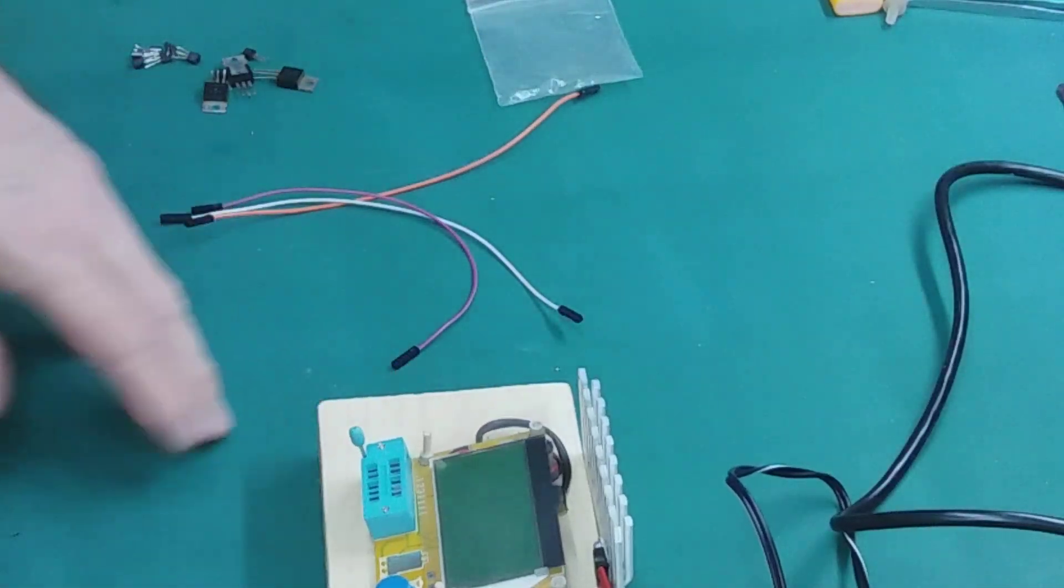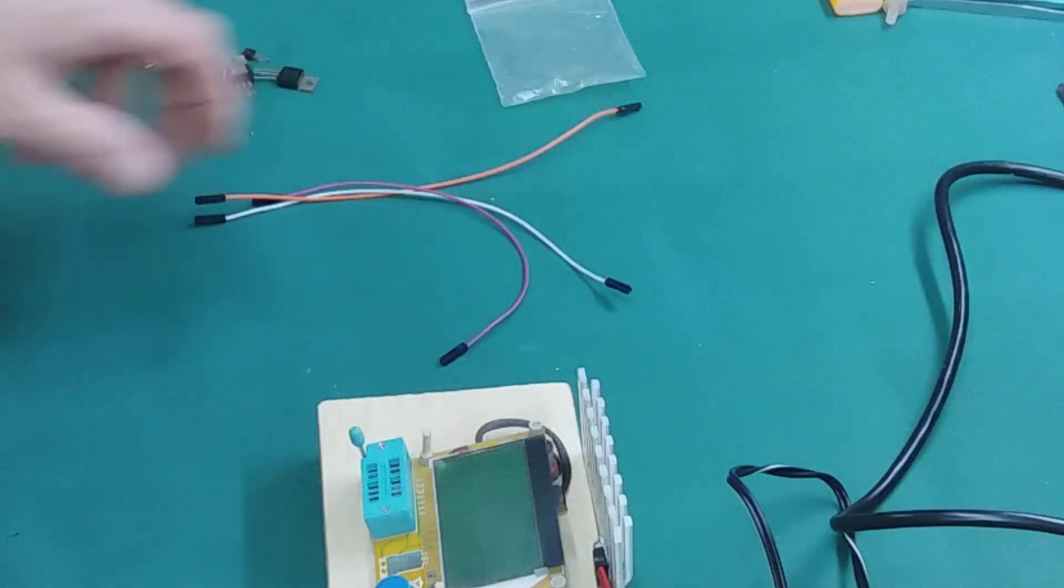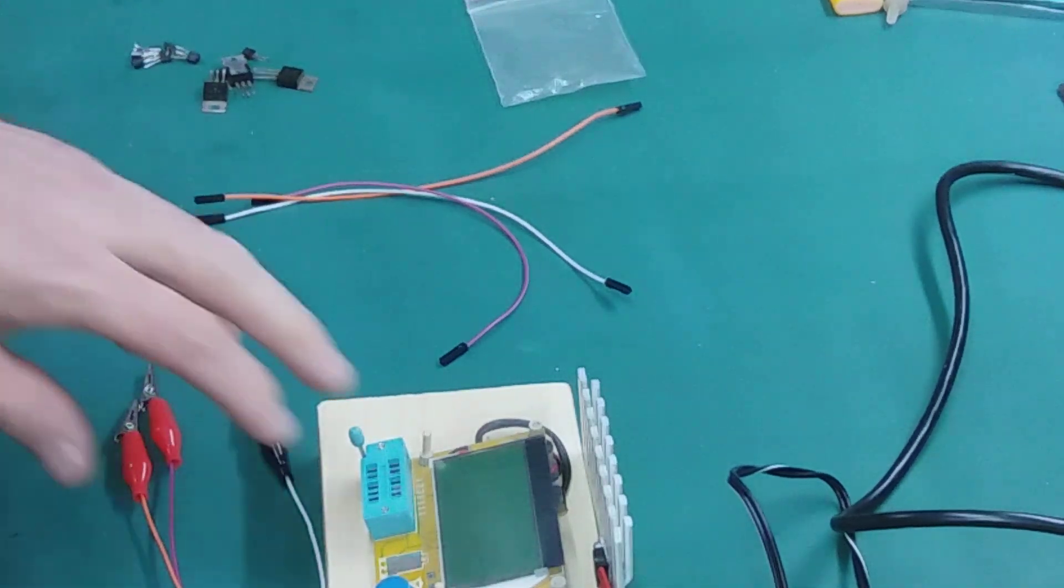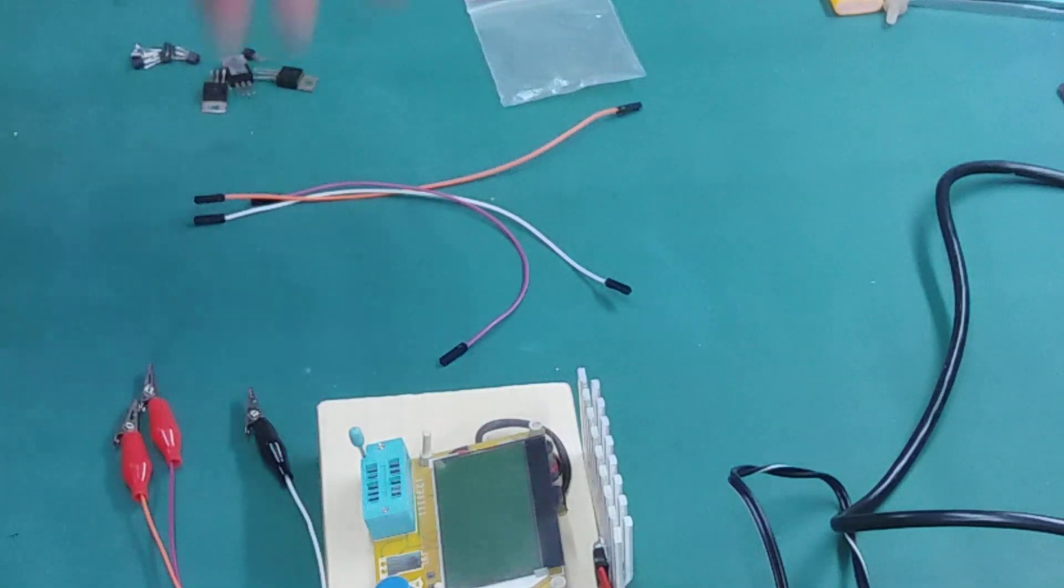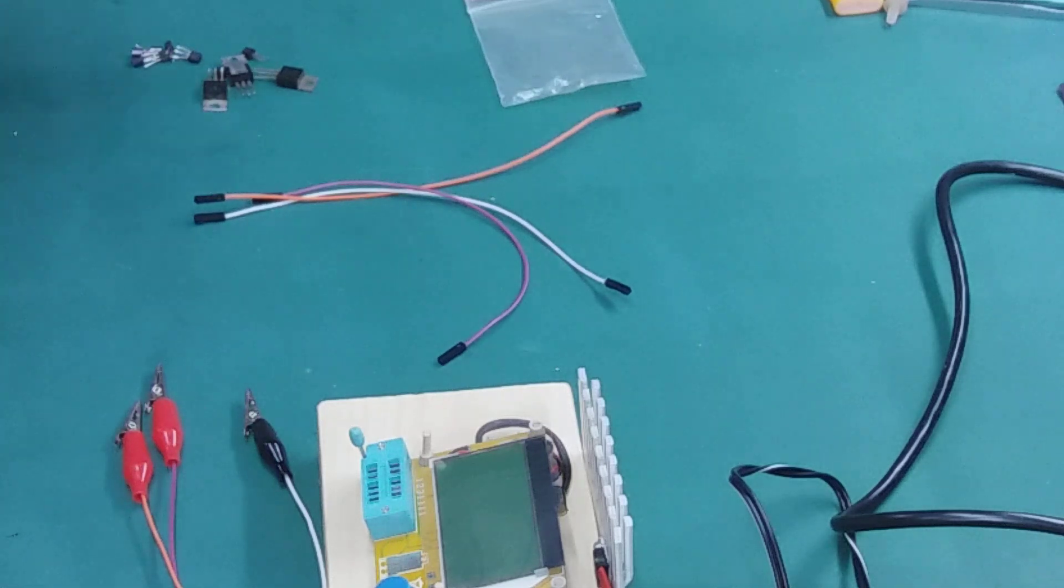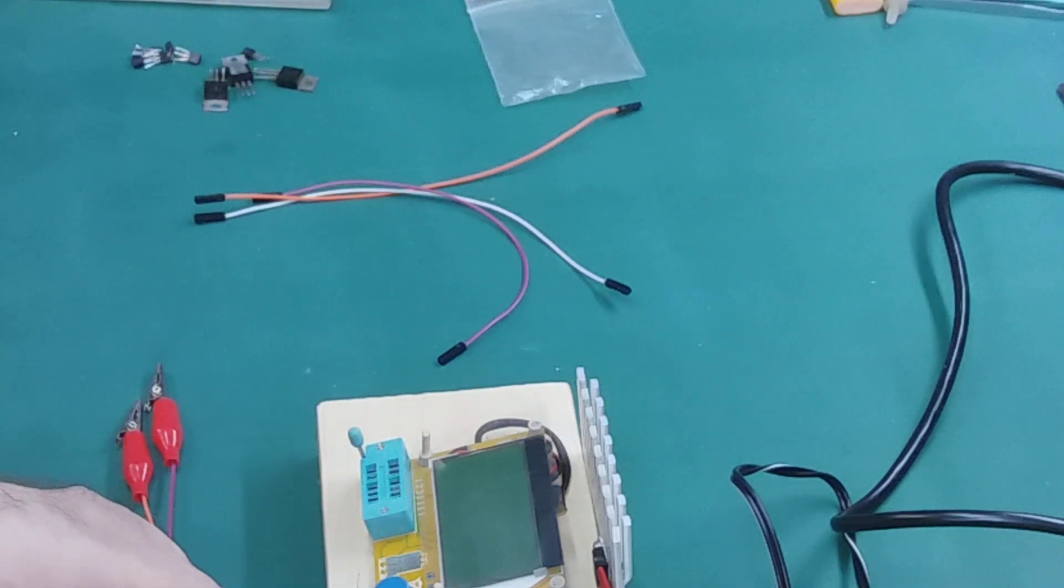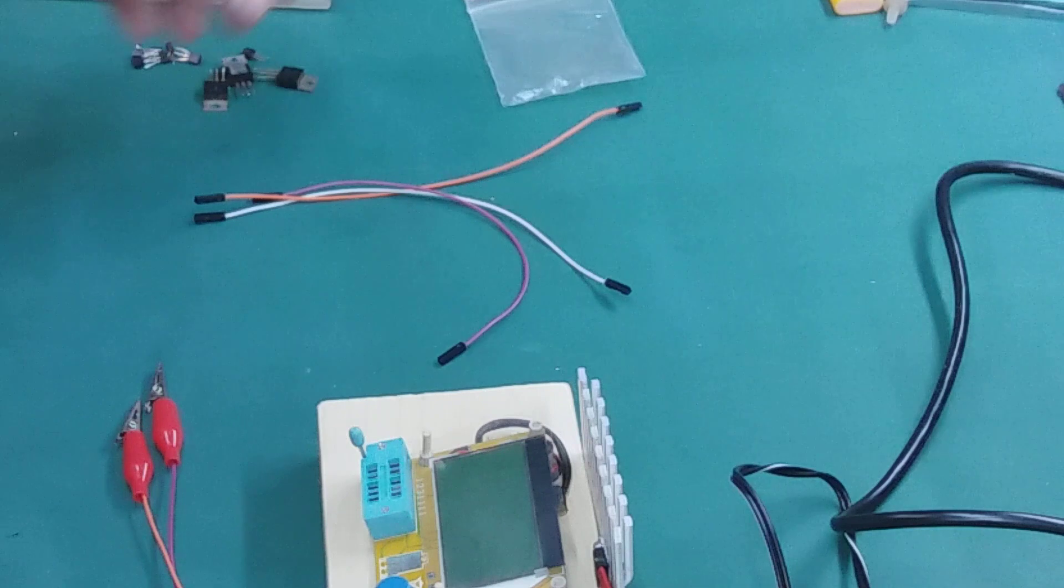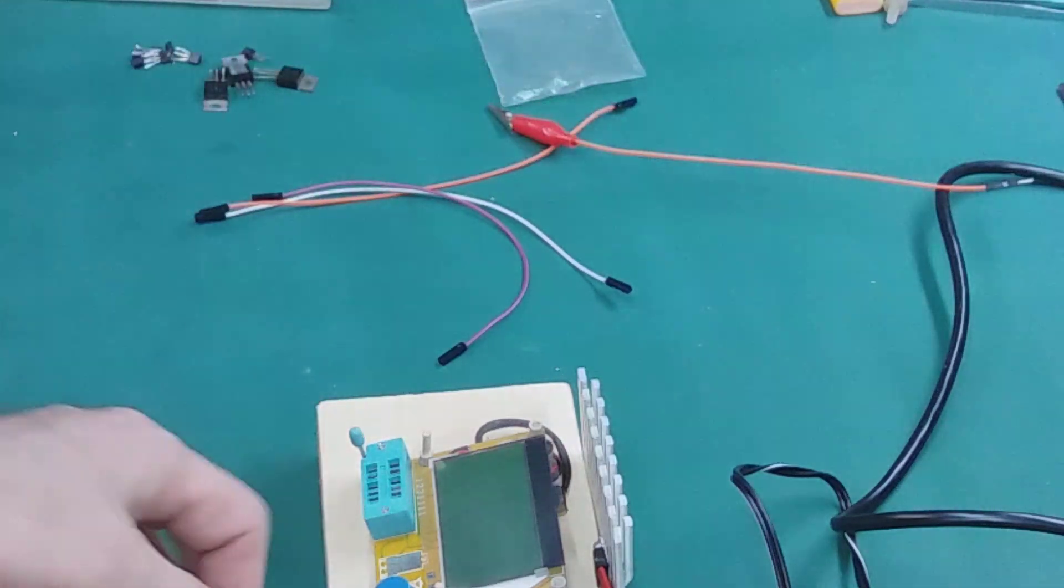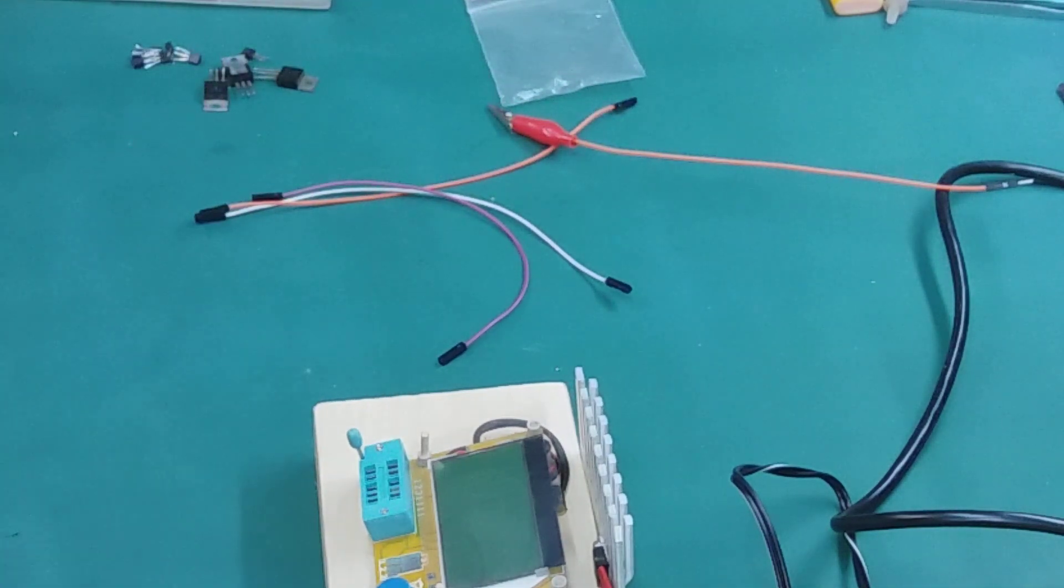This device is fantastic. It recognizes whatever you put into here, so it's a transistor, it's a diode, it's a capacitor, it's a coil, whatever you use it can measure. So I have here some coils in resistor casing and I want to show you.